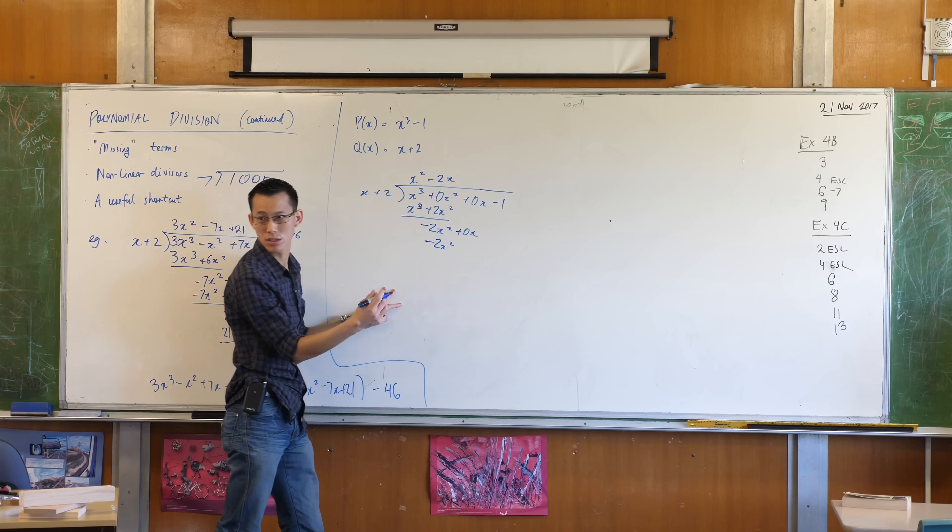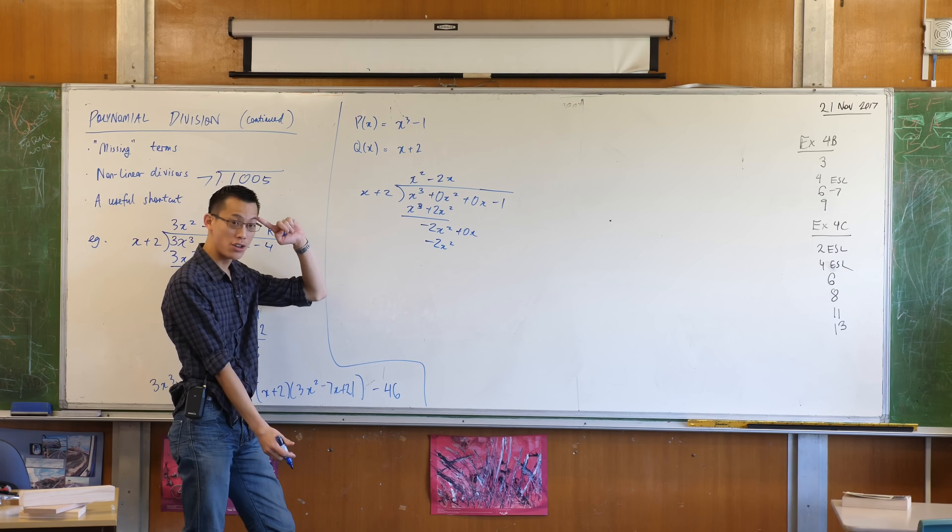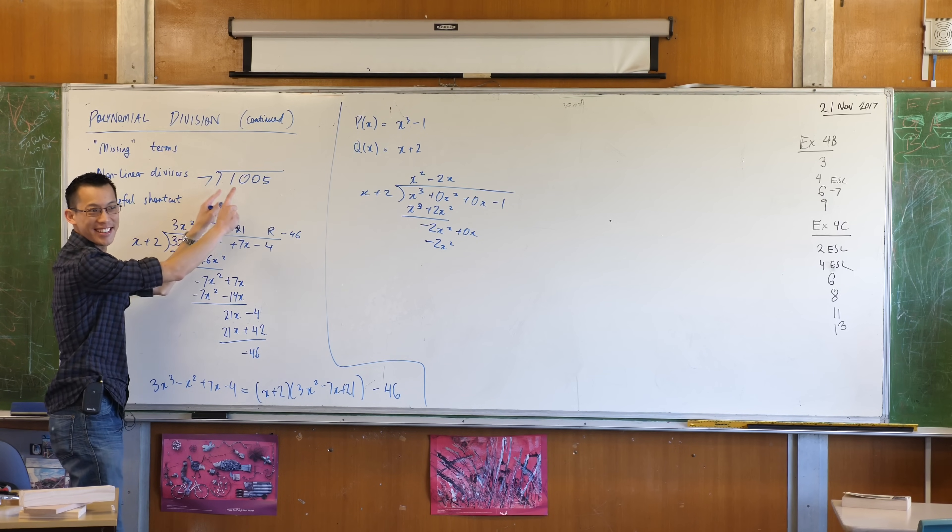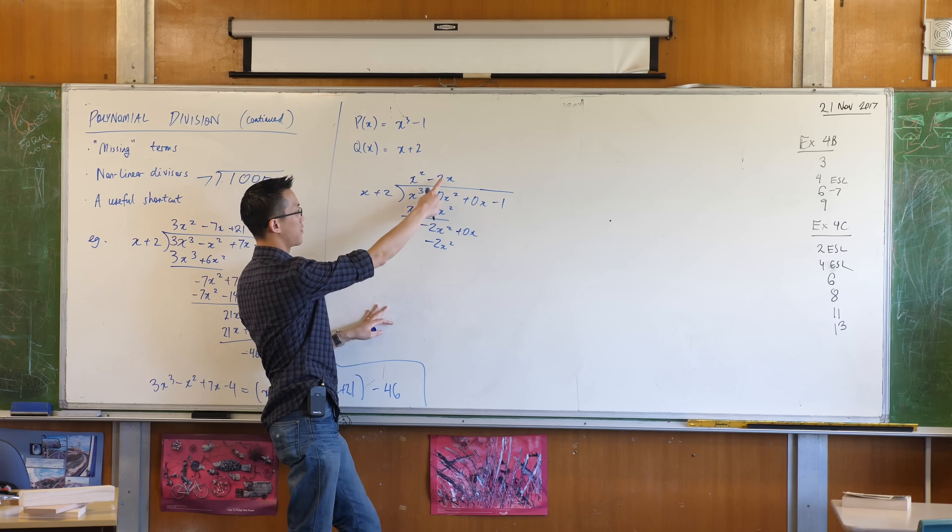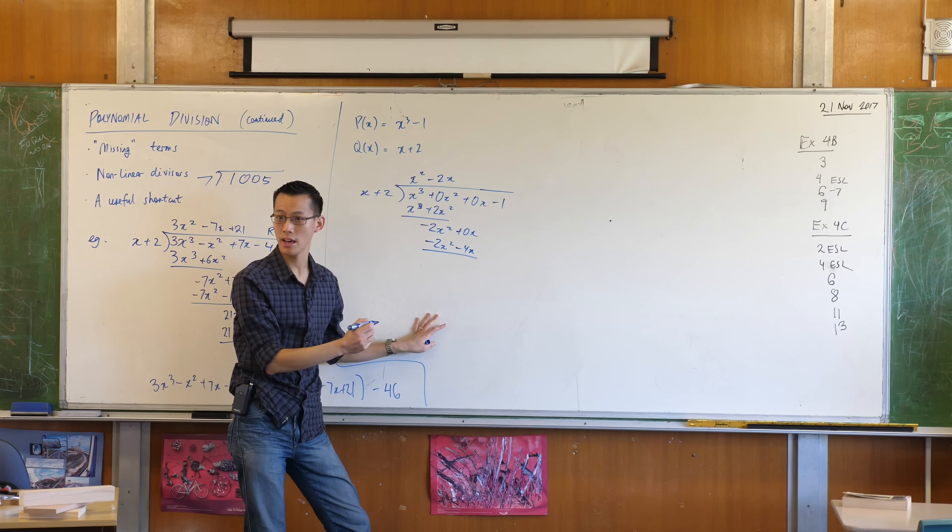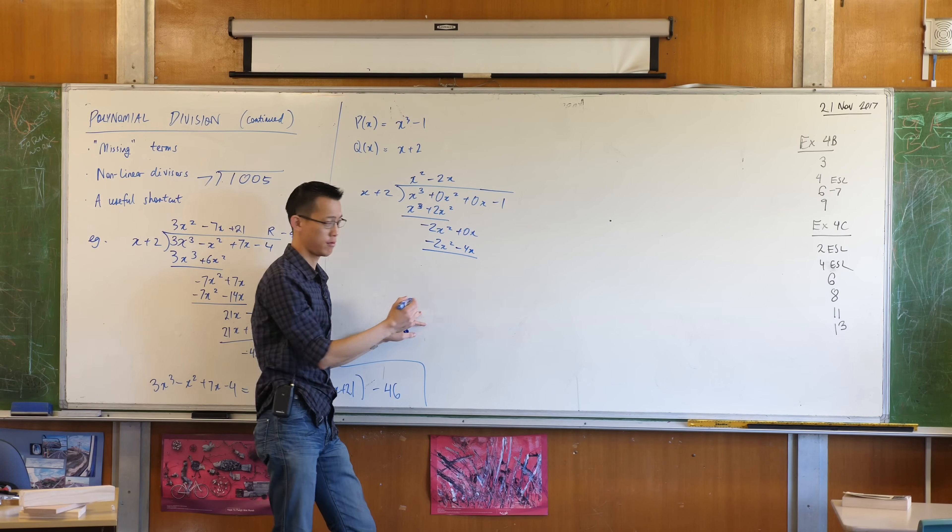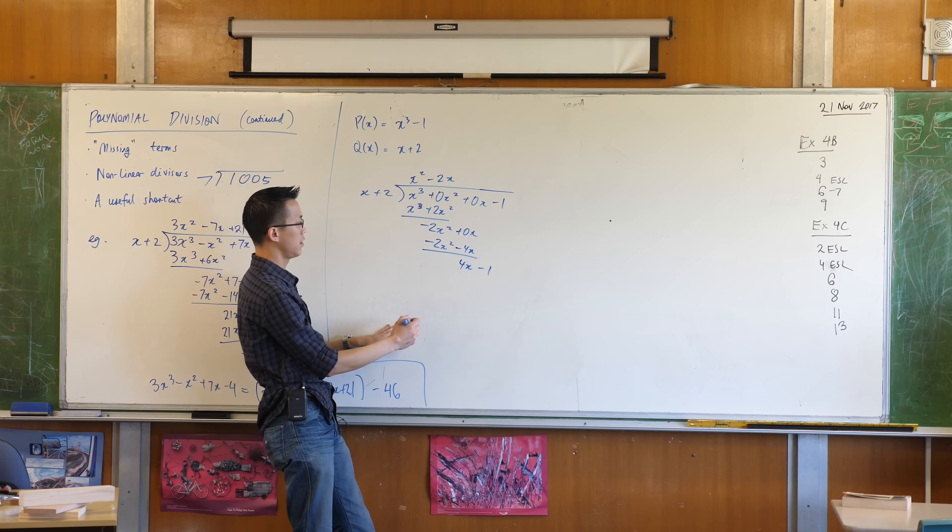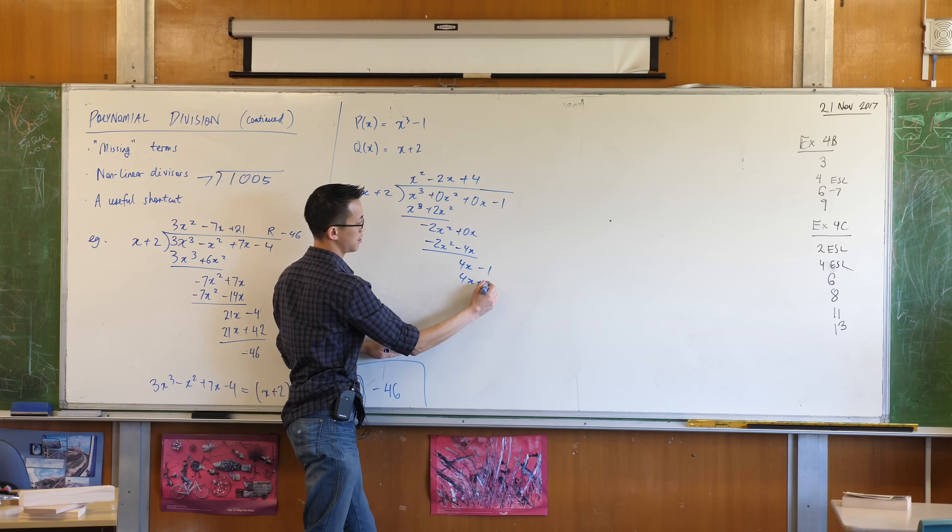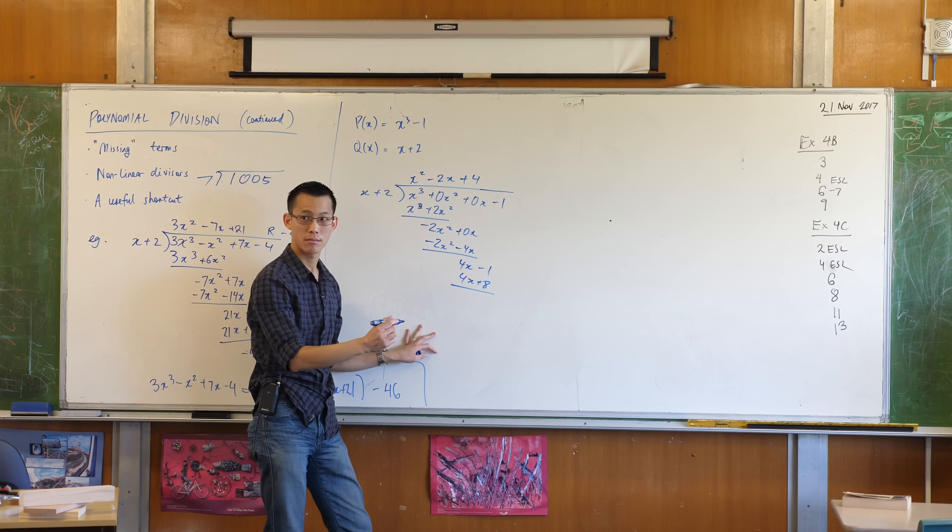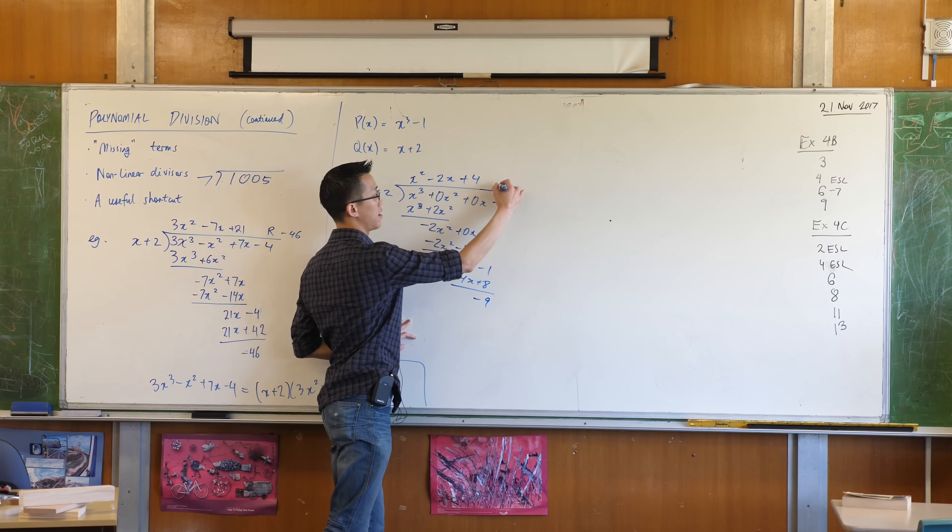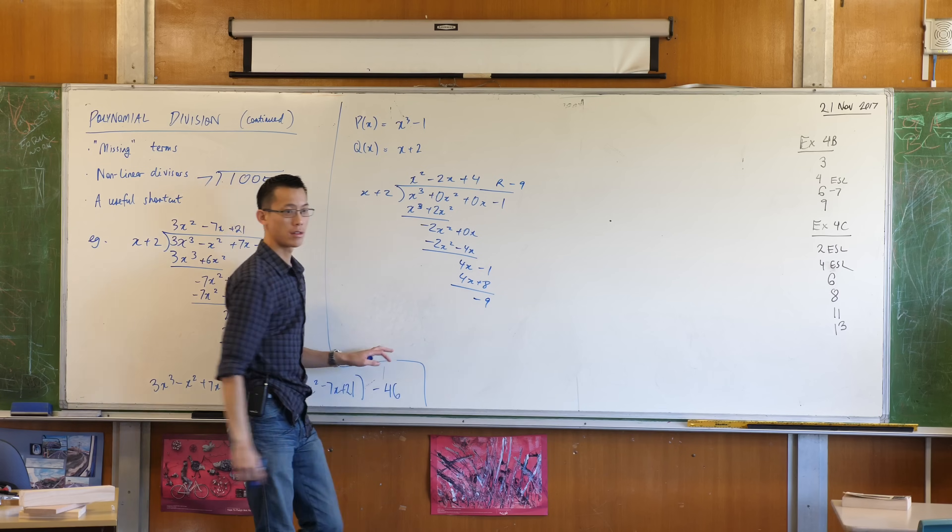So you can see, I mean, the process is all the same, right? But you have to know to be able to say, oh, there's nothings. And the nothings kind of matter, right? What have I got here? Minus 4x. Double negative there. Yeah. So what do I end up with? 4x. Take away one. How many x's are in there? Four of them. 4x plus 8. Final line? Minus 9. So that's my remainder.